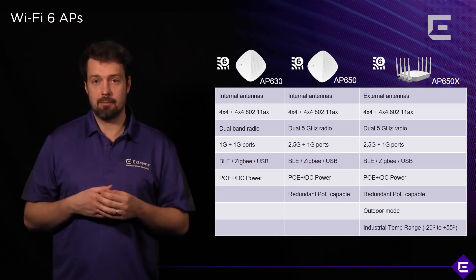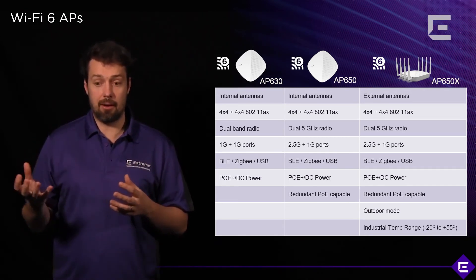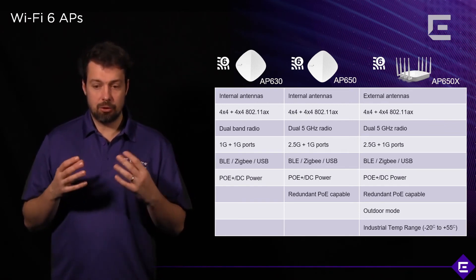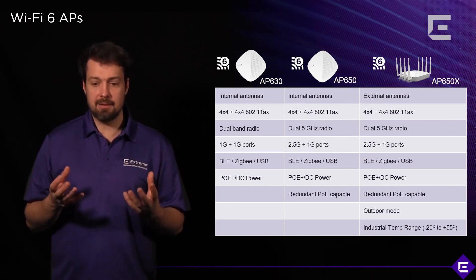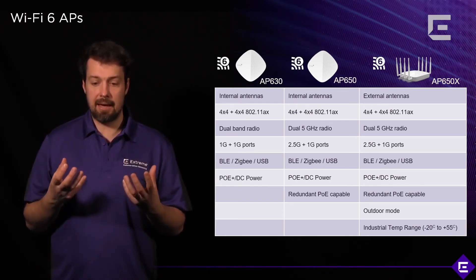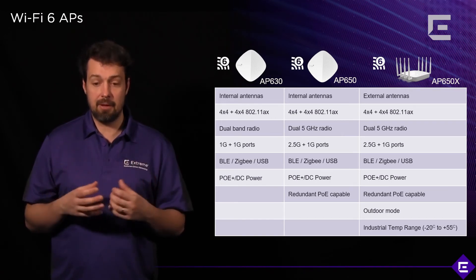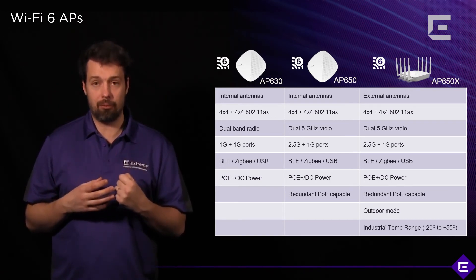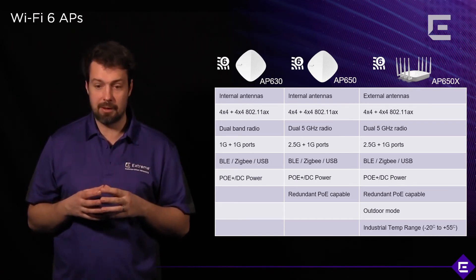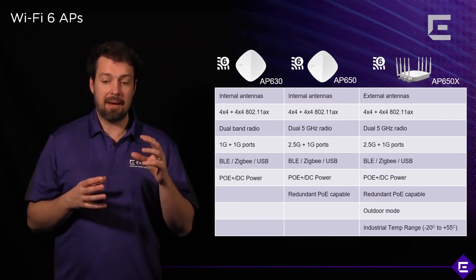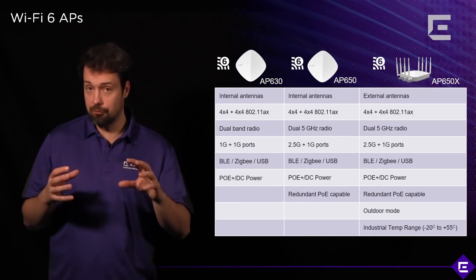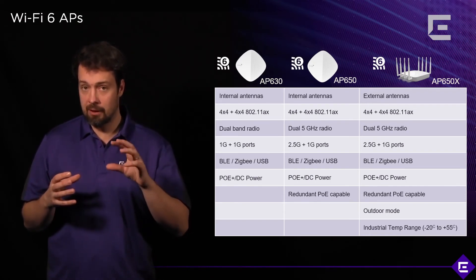It's a dual band, internal antenna 802.11ax AP with two 4x4 radios, and it has dual 5 GHz or software selectable radio capability.